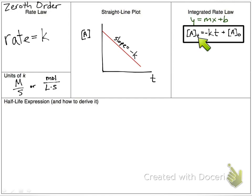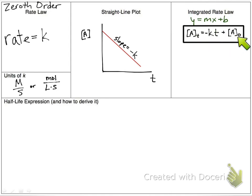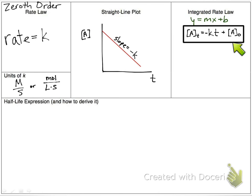The subscript t means at any given time — whatever number we plug in for t gives us the concentration at that time. The zero subscript just means when time equals zero. So this is our integrated rate law. On the AP test equation sheet, you won't get this — you'll just have to know this form of the equation, though you can derive it from the straight-line graph.